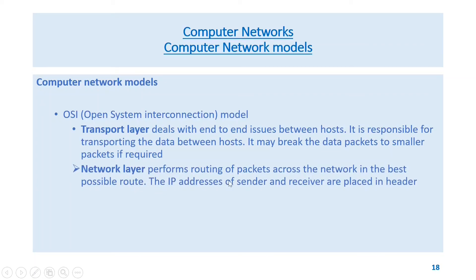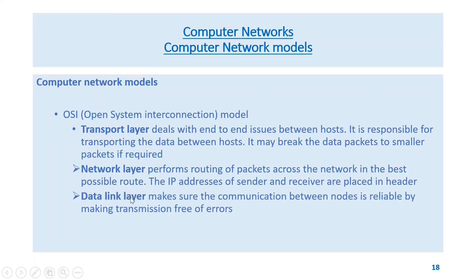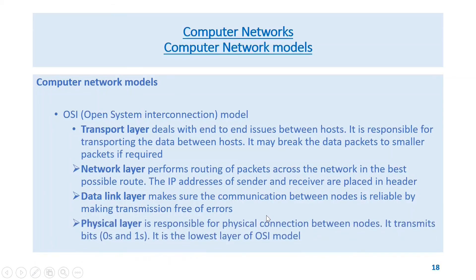The network layer performs routing of packets across the network in the best possible route. The IP addresses of sender and receiver are placed in the header. The data link layer ensures communication between nodes is reliable by making transmission free of errors.